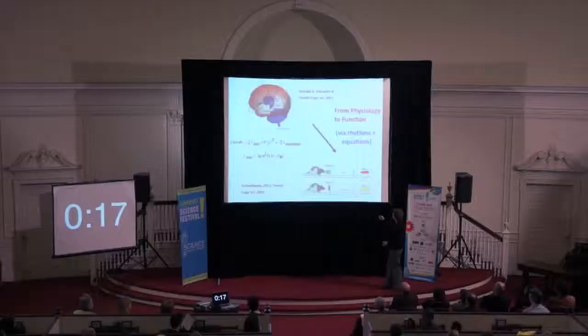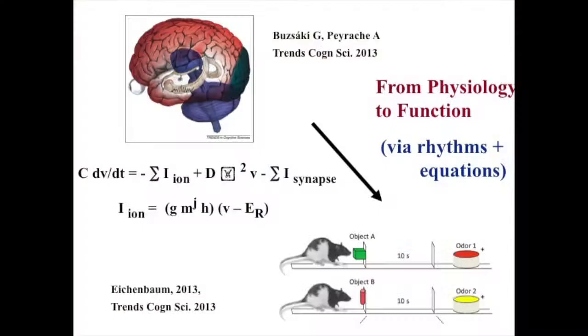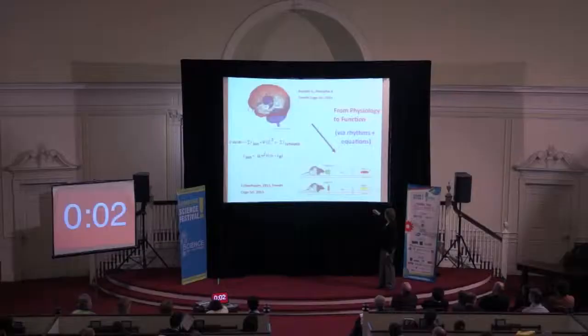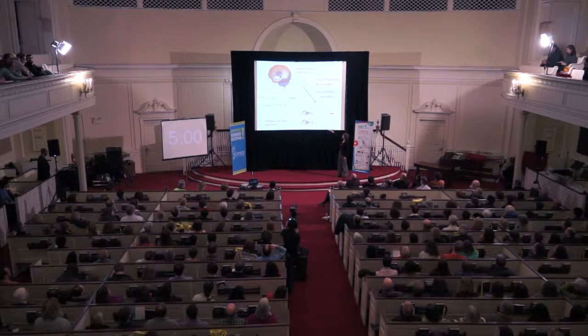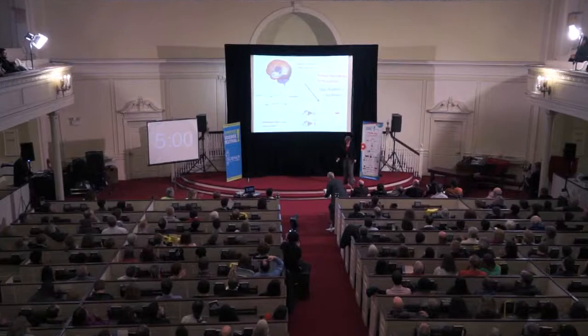Finally, in order to study brain rhythms, it's really important to be able to look at everything from what's going on physiologically to what's going on in function. My part of this is to work with mathematical modeling to understand how you get from one to the other. Thank you.